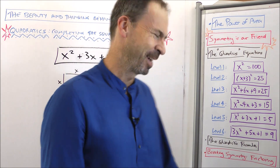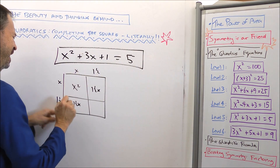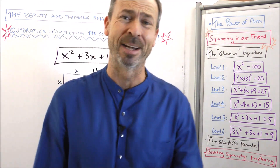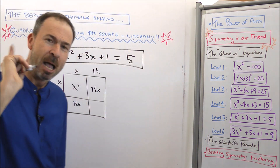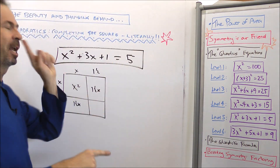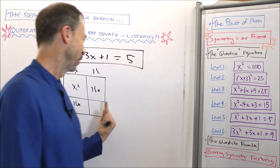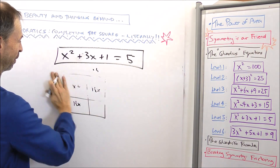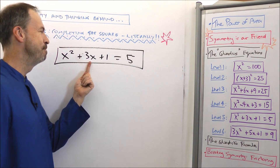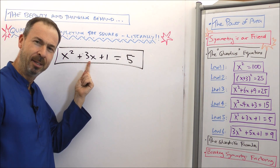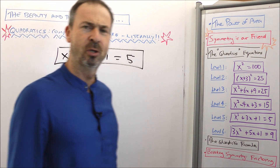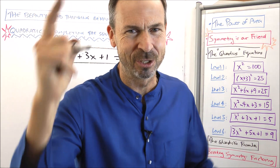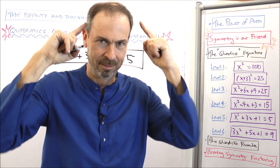I bet you could push through this and get an answer. But I'm not enjoying the hard work right now, so I'm going to be a mathematician and think for a while and try to avoid hard work. What made this one awkward? It was this middle number being odd. I don't like it being odd because I can't split it in half easily. So how could I turn an odd number into an even number? I could double everything — multiply by 2. So let's make it 2x squared plus 6x plus 2 equals 10.